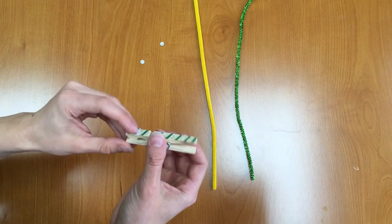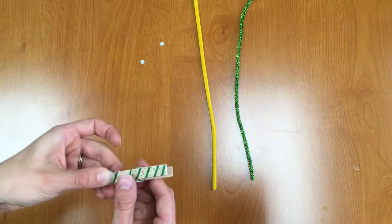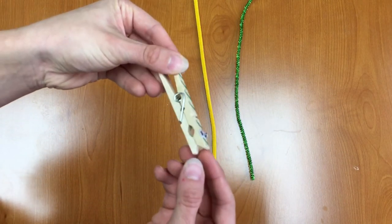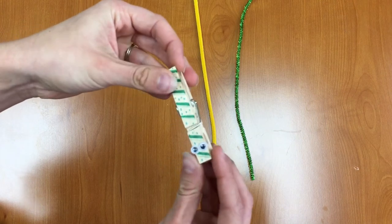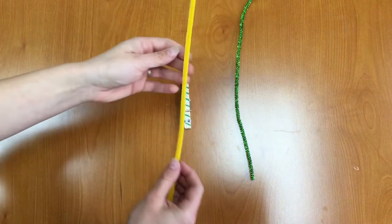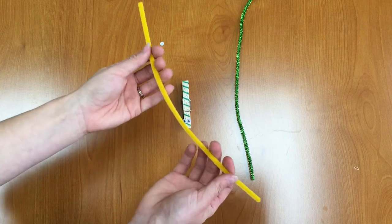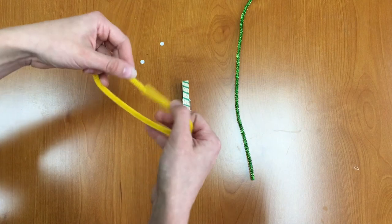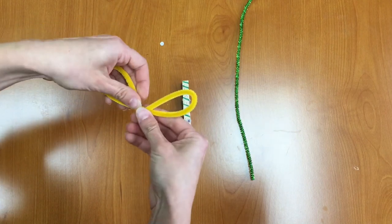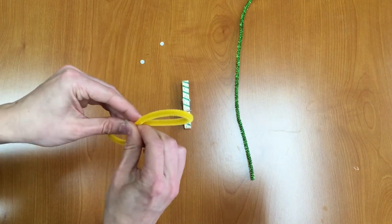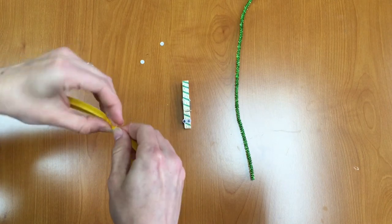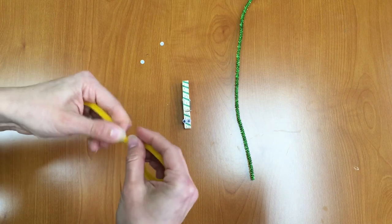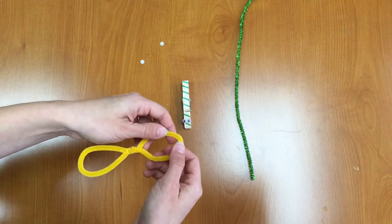Alright. Great. So now I have my googly eyes on my clothespin and now we're going to make the wings. So to make the wings you want to take one of your pipe cleaners, fold the ends into the middle and you want to twist those around the middle. And that way you have two loops just like this.